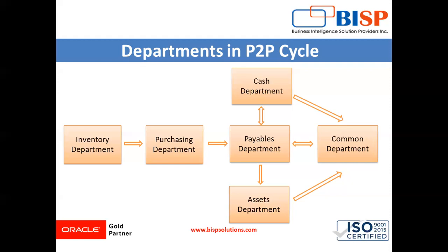The next step is to create the purchase order. Once the supplier has been chosen, a purchase order is created and approved by the purchasing department. The purchase order is then sent to the supplier to supply the goods and services, along with instructions regarding the conditions under which they must supply.